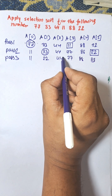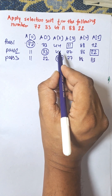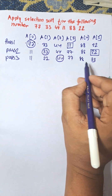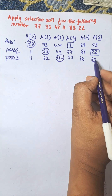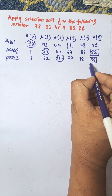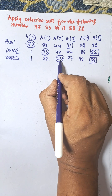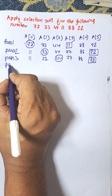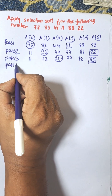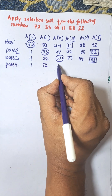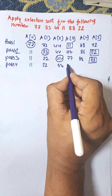Now the next position is 44, the third position. The remaining smallest number is 33. Now 44 is greater than 33, so they are swapped. After pass three, the array is: 11, 22, 33, 77, 88, 44.